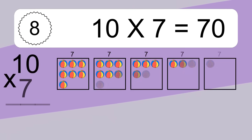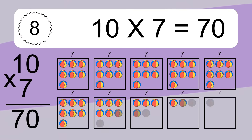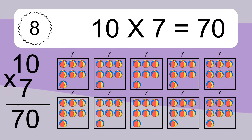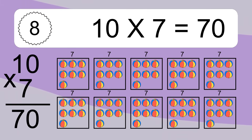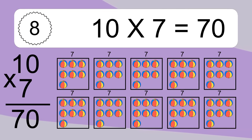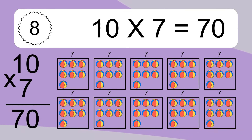10 times 7 equals 70. We have 10 boxes and each box has 7 colorful balls inside. If you count all the balls in all the boxes together, you will have 10 times 7 balls. This equals 70 balls.